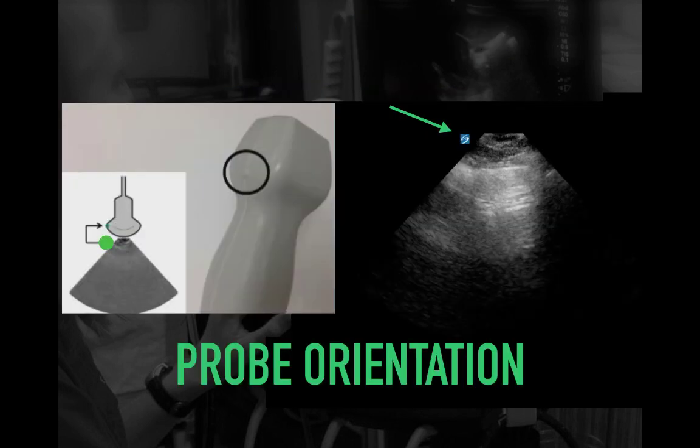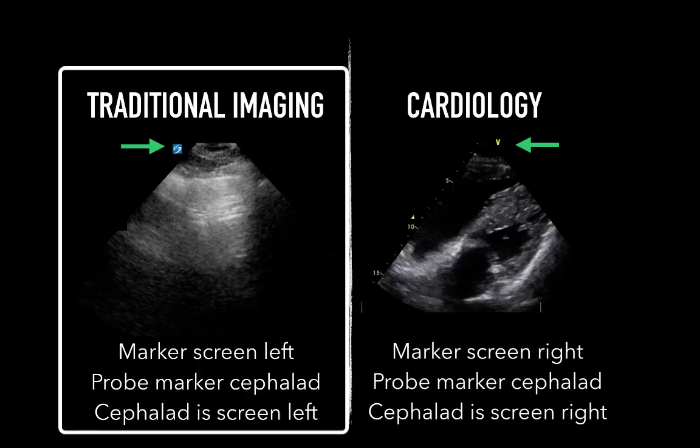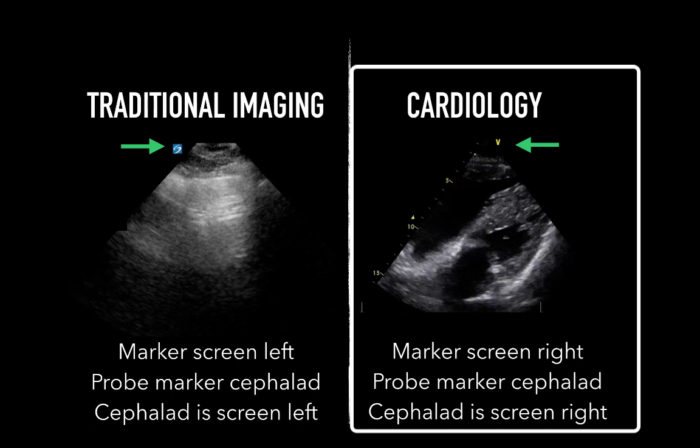Again, back to probe orientation. It is key to understand that there is a screen marker and a probe marker. Now, in traditional imaging, to emphasize, the screen marker is left. And in the longitudinal plane, cephalad is screen left and caudad is screen right. On the right, in cardiac imaging, the marker is screen right.